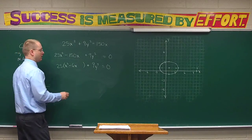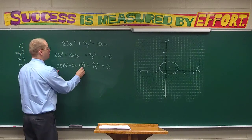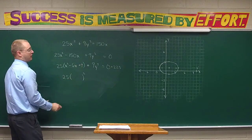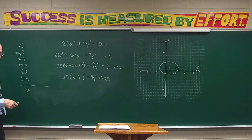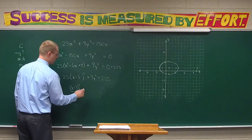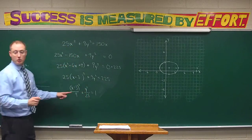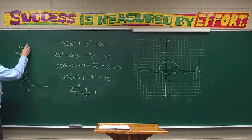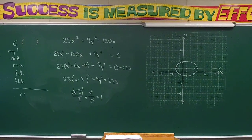We complete the square with positive 9, but I don't add 9 to the other side — 225 gets added to the other side, because we multiplied by 25. So we turn this into the binomial squared: 25(x − 3)², and here we have 9y² all equal to 225. Now we divide through, and we get (x − 3)²/9 + y²/25 = 1. Where is the center of the ellipse? (3, 0).